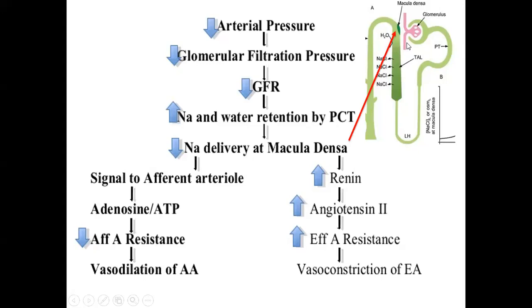Prostaglandins cause vasodilation of the afferent arterioles to increase blood flow into the glomerulus, while renin stimulates the renin-angiotensin system leading to constriction of the efferent arterioles, together maintaining glomerular filtration pressure as a compensatory mechanism.